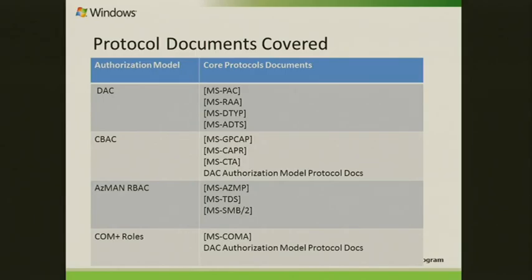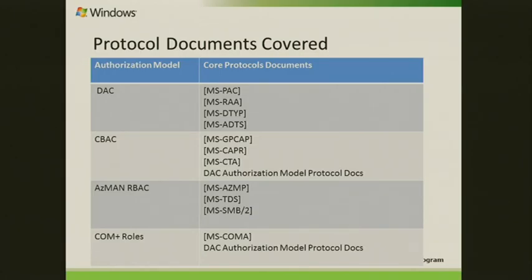There is a document on CTA — the Claim Transformation Algorithm. This document talks about when you have a different forest, you need to transform the claims from one forest to another forest. These documents provide algorithms, rules, and grammars associated with that, along with a main protocol system. As part of AzMan and RBAC, there is a protocol data structure document on AzMan — the Authorization Manager policy file format. SMV is a protocol that carries authorization files onto the application server. And DDS allows you to configure policies onto a SQL server, then carries those policies onto the application server.